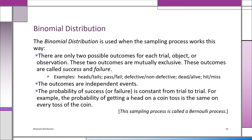The probability of success or failure is constant from trial to trial. For example, the probability of getting a head on a coin toss is the same on every toss — even if you got four heads in a row. The probability of a head on the fifth toss is still 50%. Even if you got ten heads in a row, on the eleventh toss the probability is still 50%. The word 'bi' means two — so when you see binomial distribution, you know it's two outcomes.